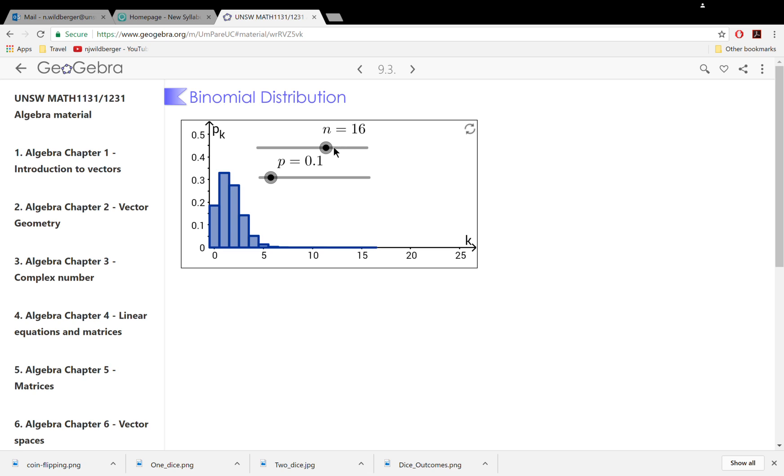If you toss the coin 16 times, then you're most likely to get one head, but also reasonably likely to get two heads, or zero or three. The other probabilities are correspondingly smaller.